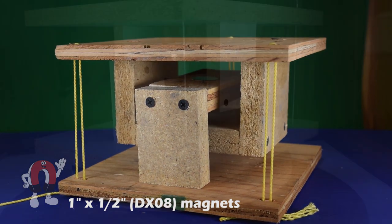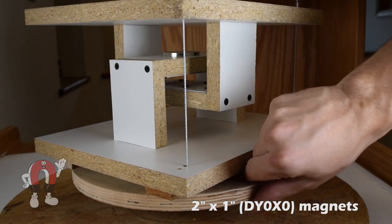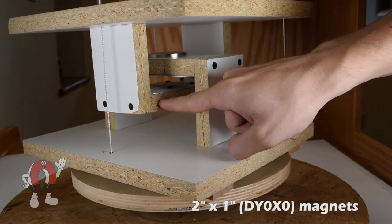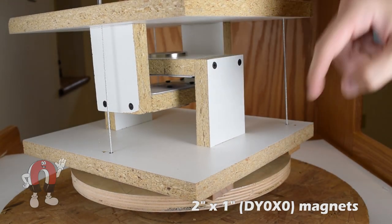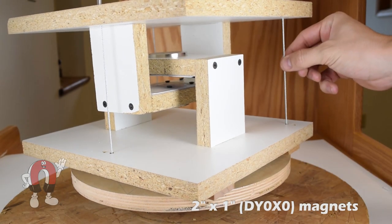Okay, you know we couldn't stop there. This monster uses a pair of 2 inch diameter by 1 inch thick disc magnets. Be careful with magnets this powerful. We needed steel cable for the strings on this one, because the powerful magnets tended to stretch out our yellow string.